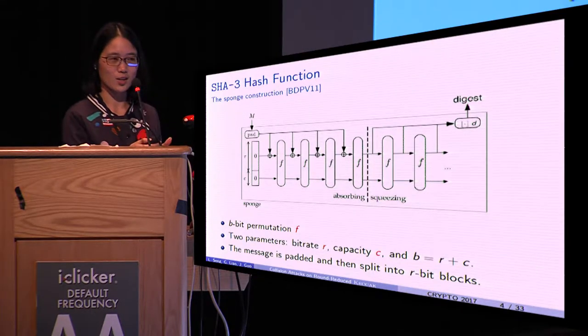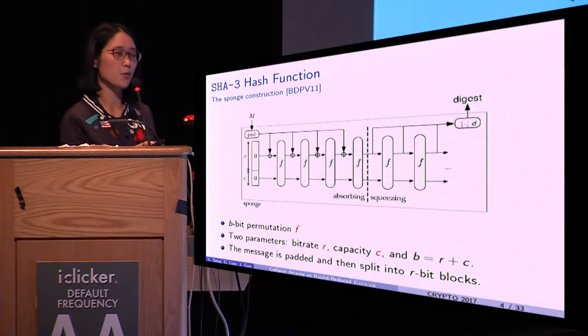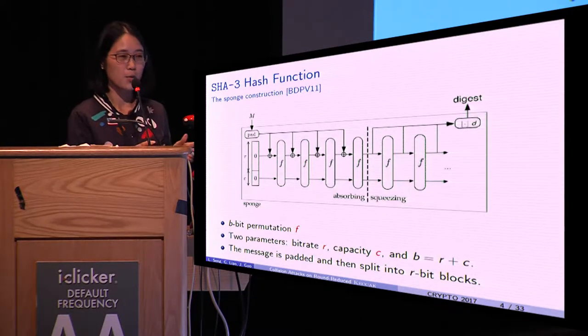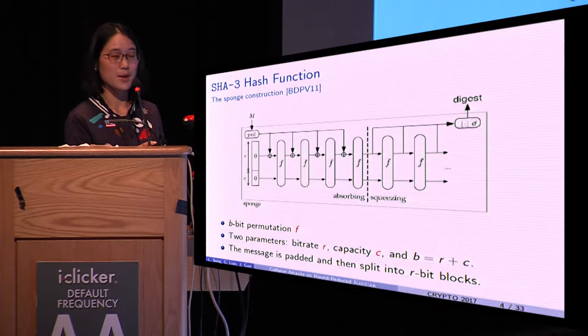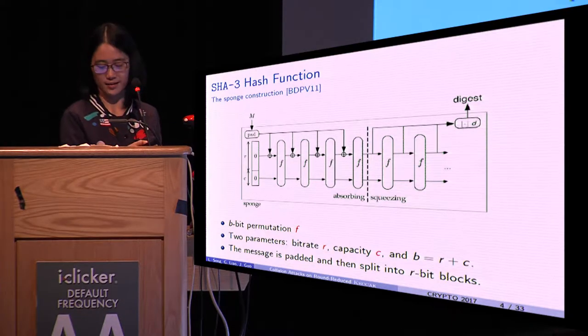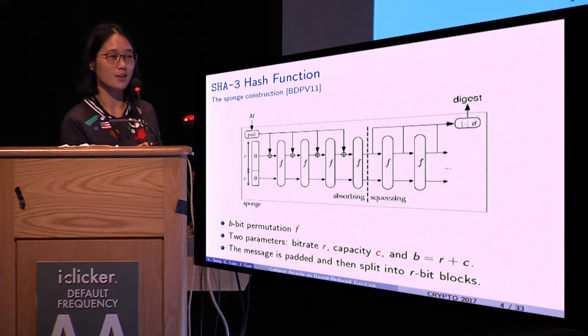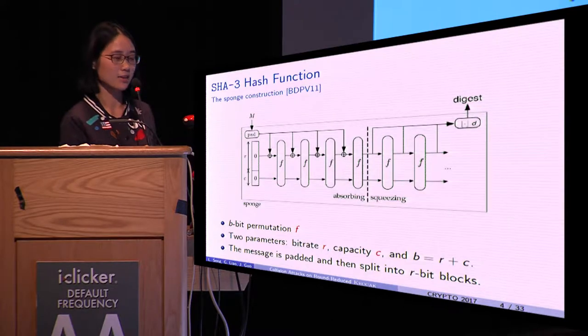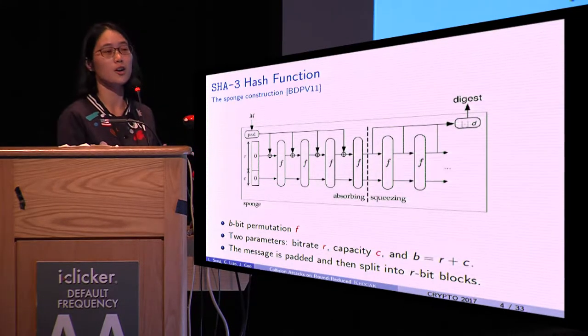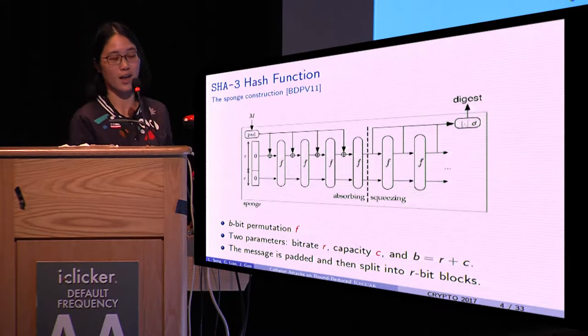KECCAK takes in a message M and outputs a digest of D bits. Before processing, the message is padded and then split into r-bit blocks. Each block is XORed to the first r bits before applying the permutation F.